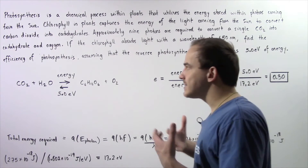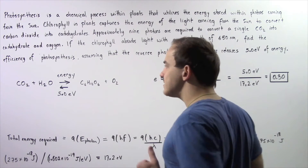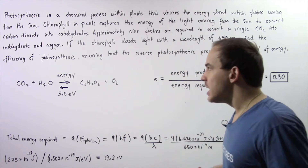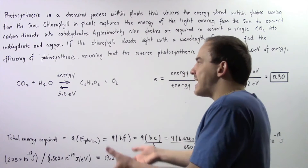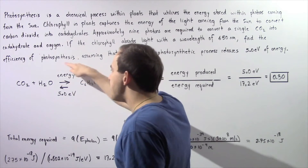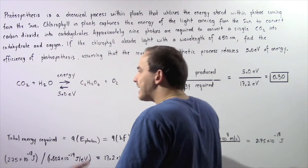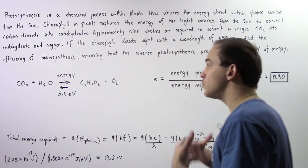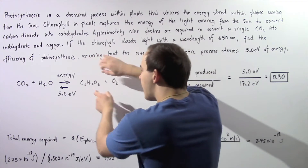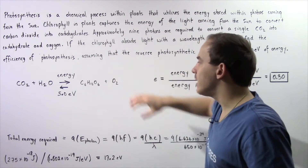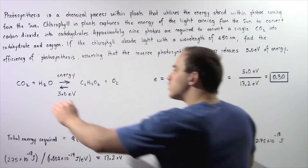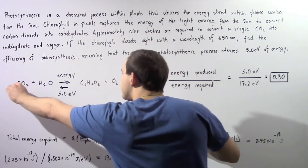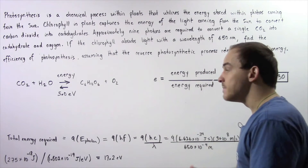Let's begin by summarizing the process using the following unbalanced chemical reaction. The plant captures a certain amount of energy that is used to combine water and carbon dioxide to form carbohydrate (the sugar) as well as oxygen. This is the endothermic forward process, which requires energy.